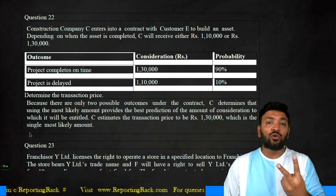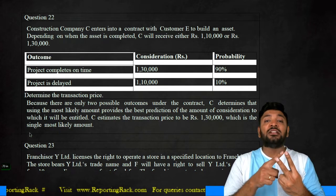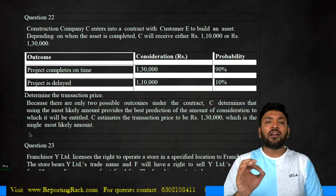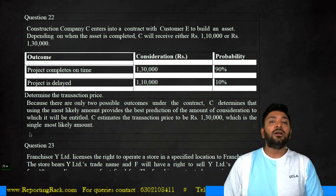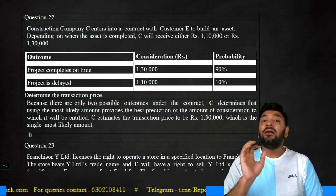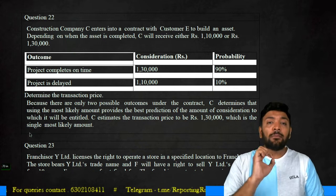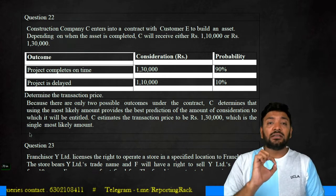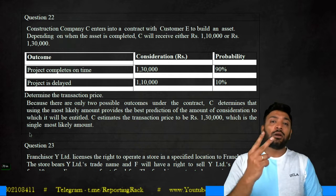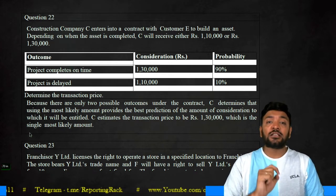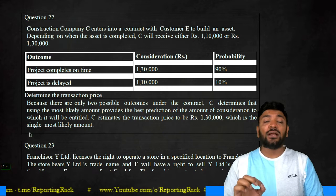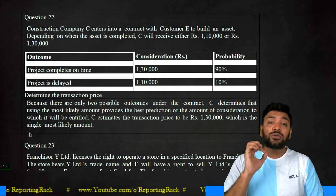When there are only two possible outcomes, instead of going for expected value, I will choose the most likely amount. The most likely amount here is that with 90% probability the project will complete on time. Therefore, I will consider the transaction price as 130,000. If you had multiplied with the probability, that answer is wrong — probability multiplication only applies when the number of outcomes in determining a transaction price are more than two. Here there are only two outcomes, so most likely amount and not expected value. Therefore, 130,000 is the transaction price at which revenue shall be recognized.